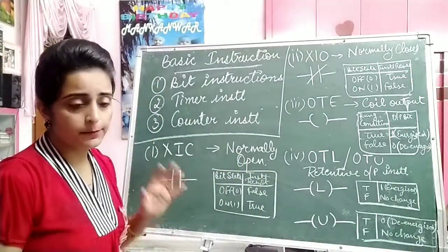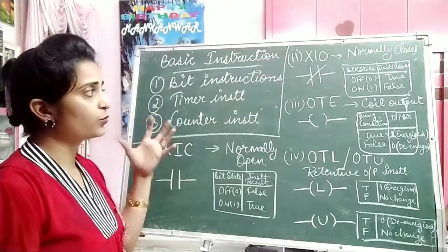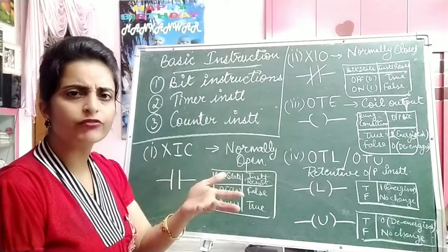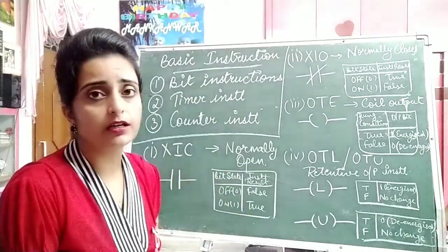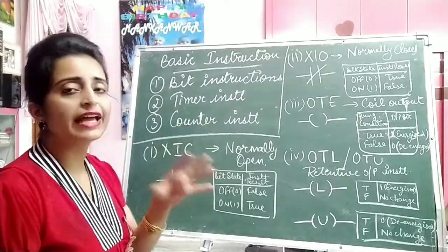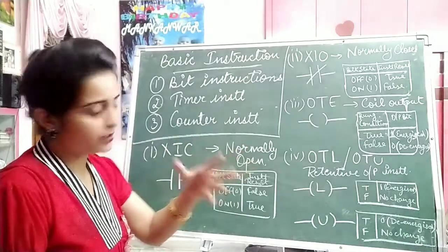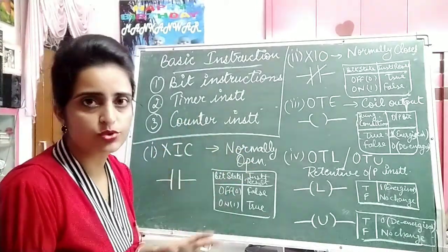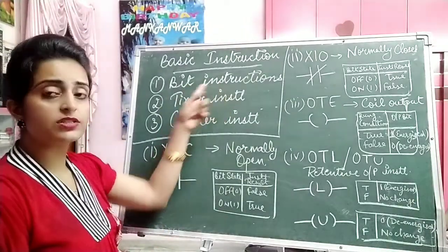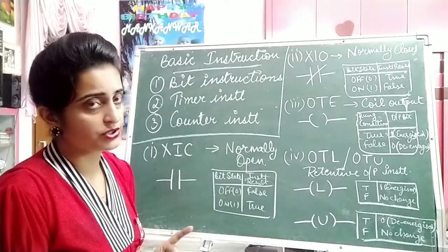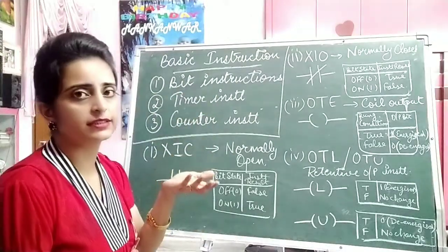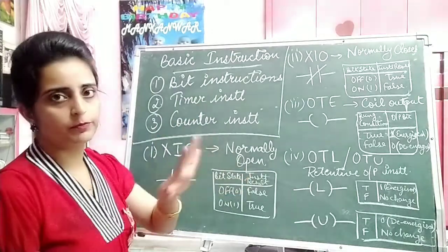The basic instructions are the different types of instructions used to make our ladder diagram program. Different manufacturers use different mnemonics or addressing instructions. Here in this subject, we will use Allen Bradley's PLC mnemonics. When we talk about basic instructions, we have three types: first is bit instructions, second are timer instructions, and third are counter instructions. Today we will discuss only the bit instructions; timer and counter instructions will be covered in later lectures.